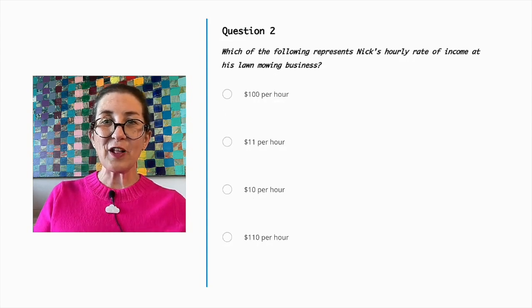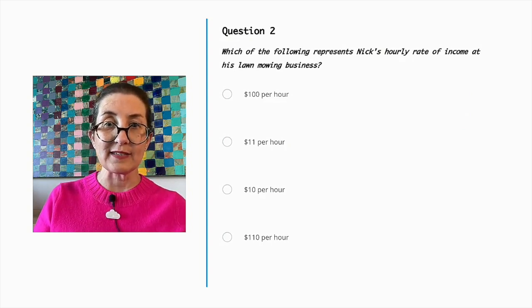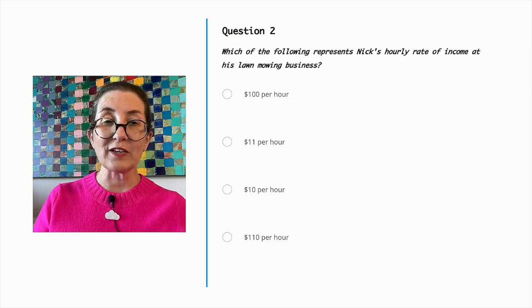Which of the following represents Nick's hourly rate of income at his lawn mowing business? $100 per hour, $11 per hour, $10 per hour, or $110 per hour.